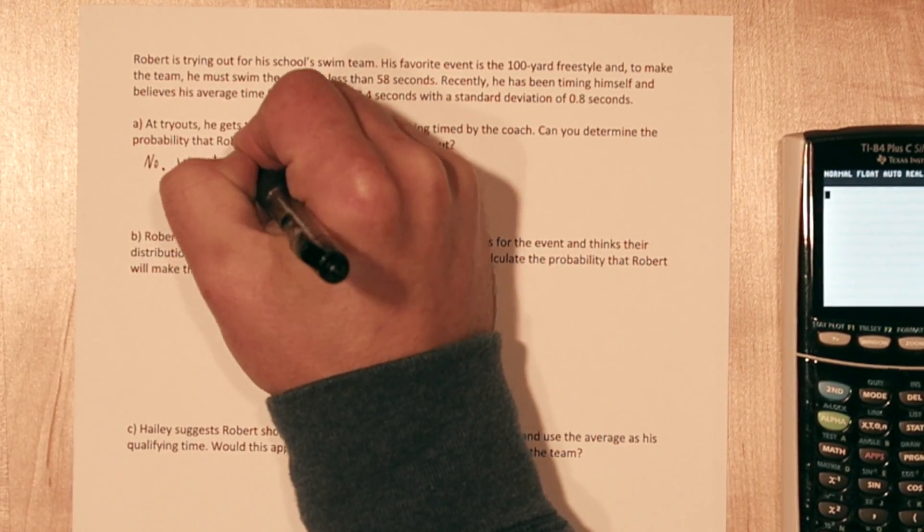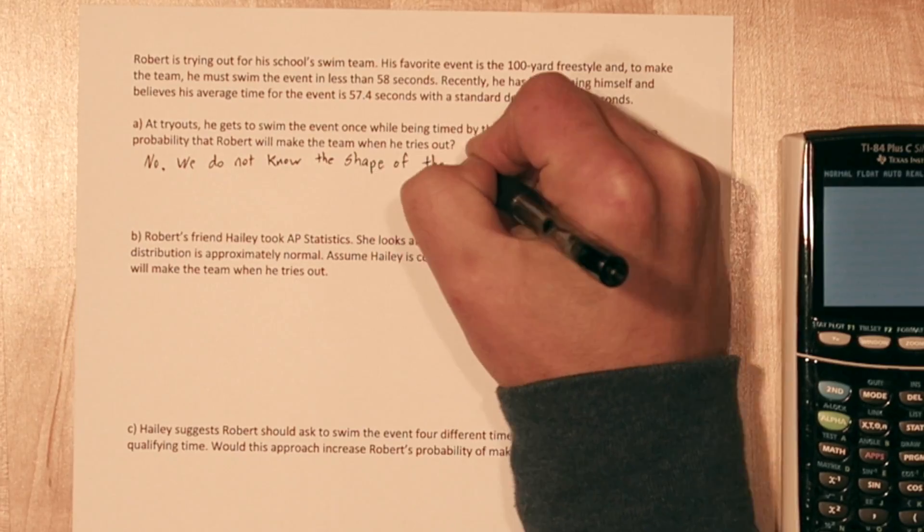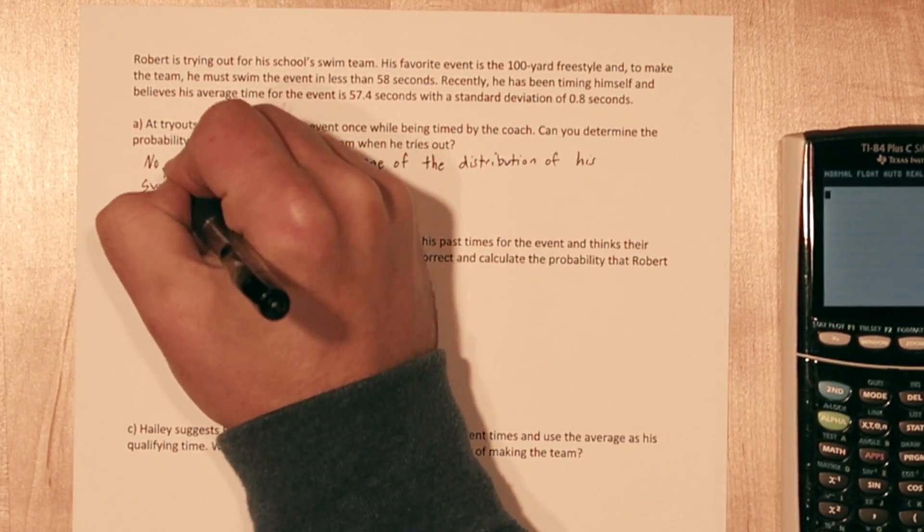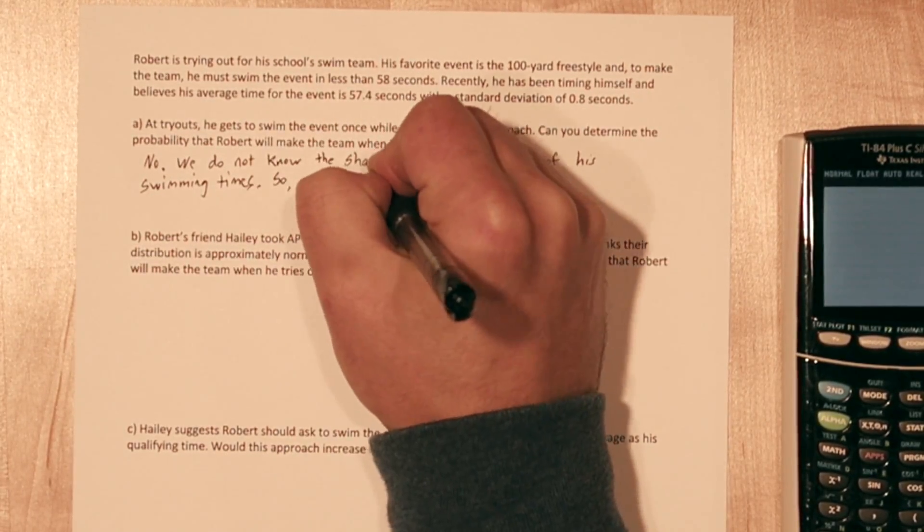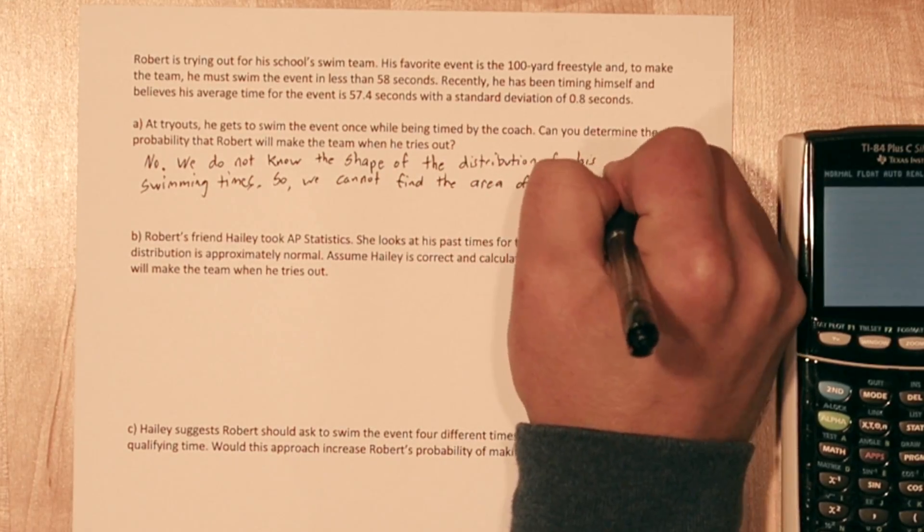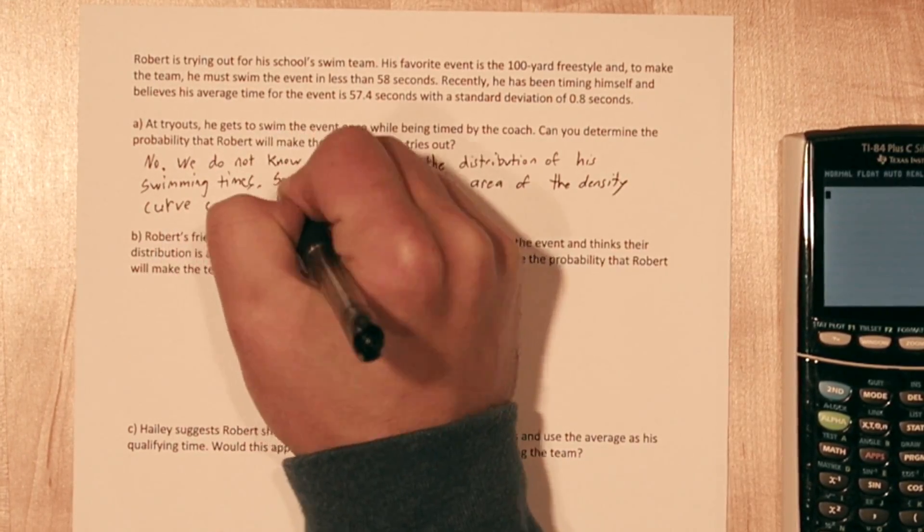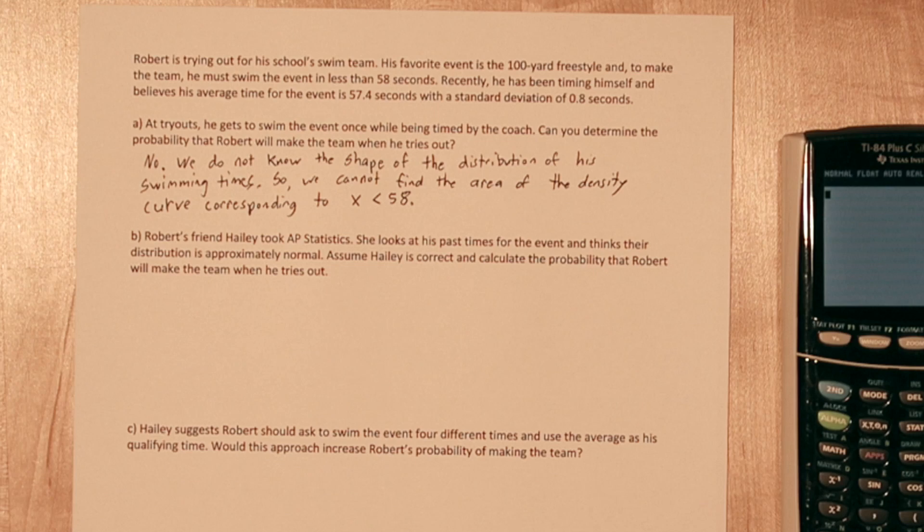The first question is, can we figure out the probability Robert will make the team? The answer is no. We do not know the shape of the distribution of his swimming times, so we can't find the area of the density curve corresponding to times less than 58 seconds.